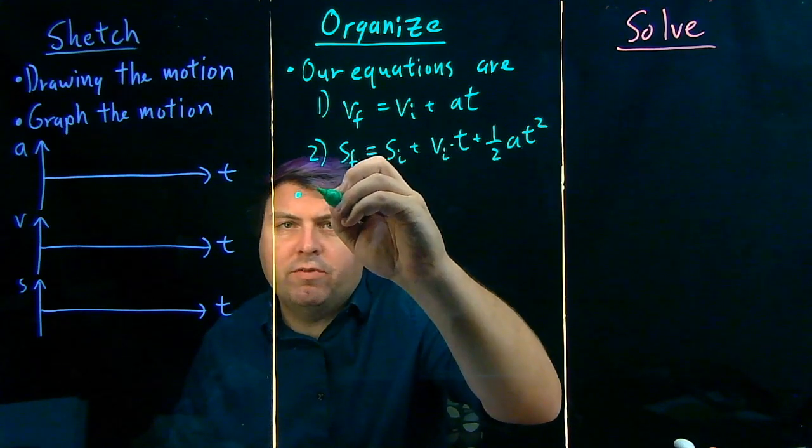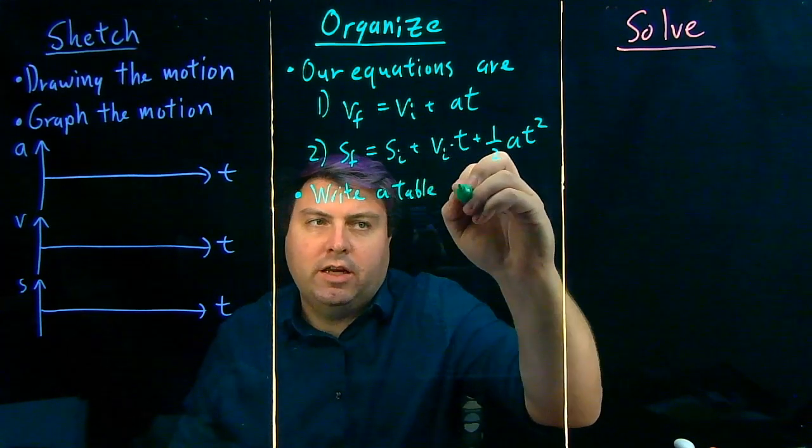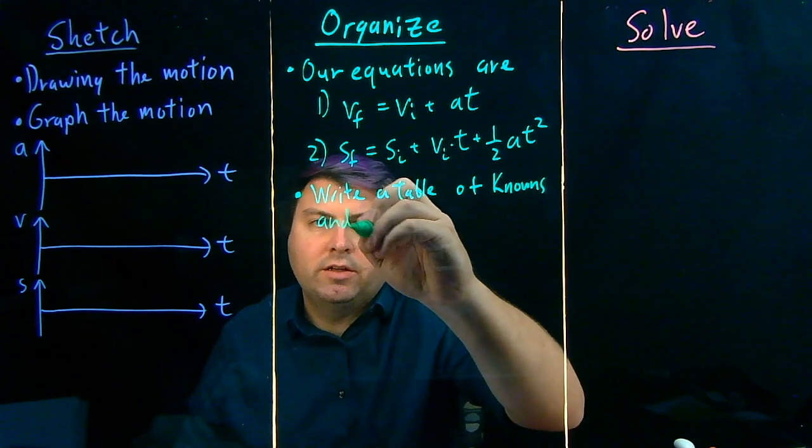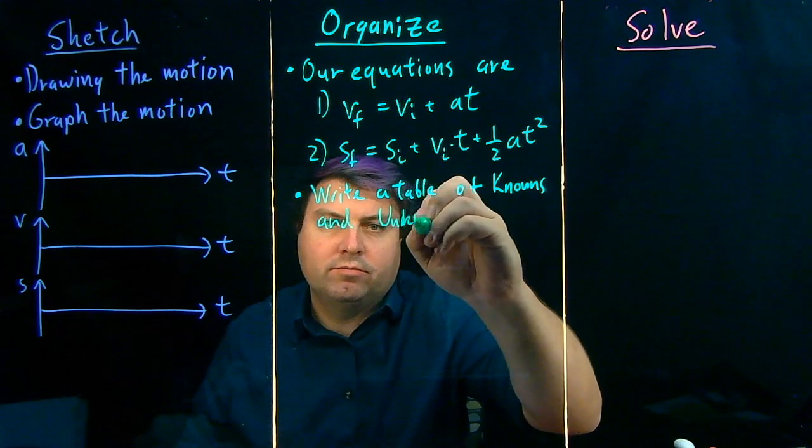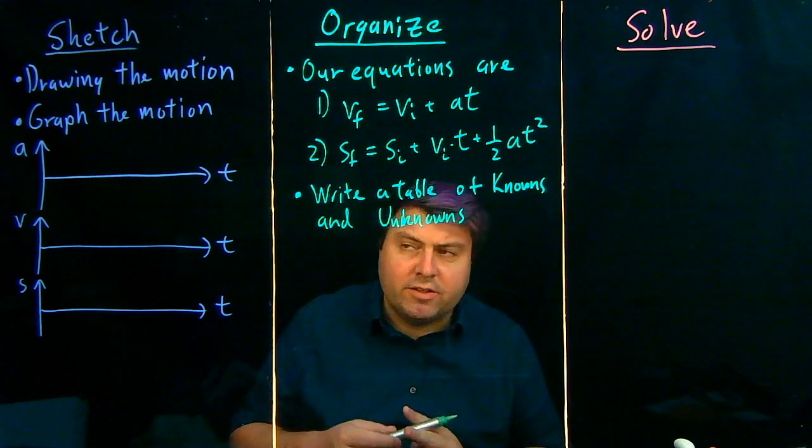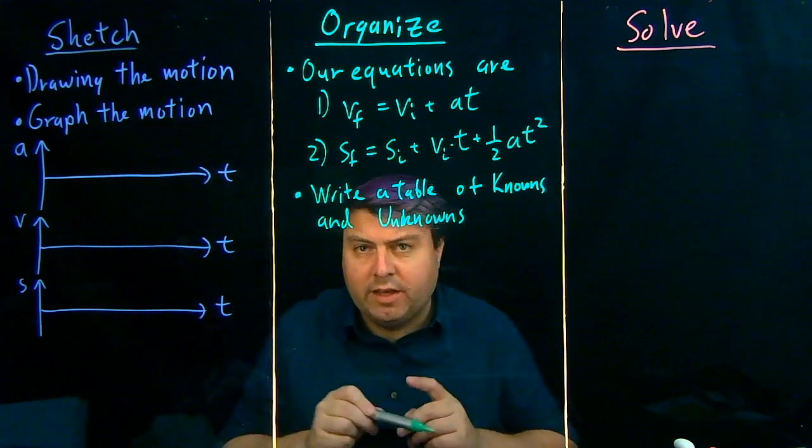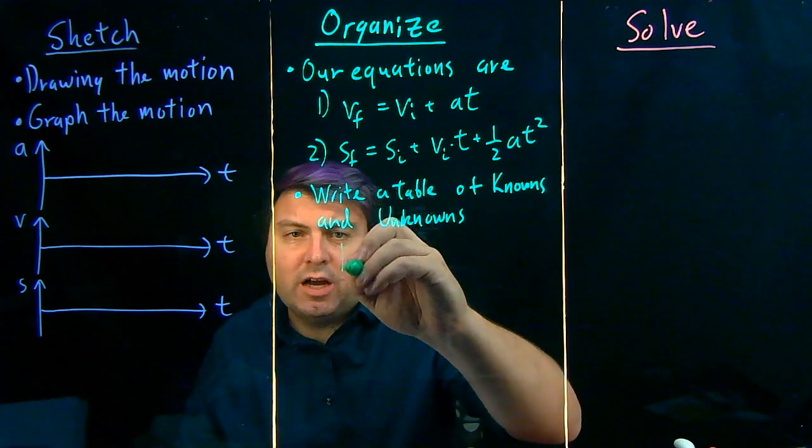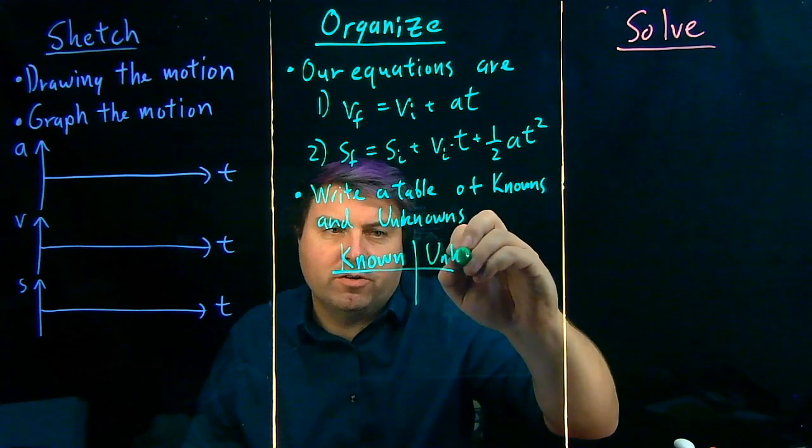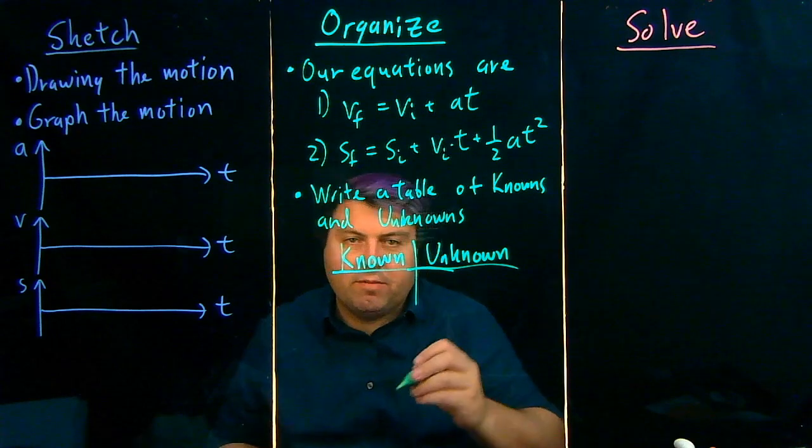To help with that is to write a table of knowns and unknowns. When we are talking about knowns, we are talking about things that we determined either from the problem or from making these graphs or from making these drawings of the motion. Oftentimes, it will not be directly given, but will have to be somewhat inferred or sussed out. And then the unknowns is mainly what the problem is asking for.